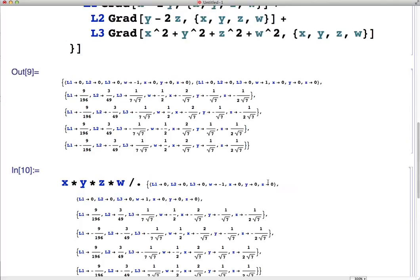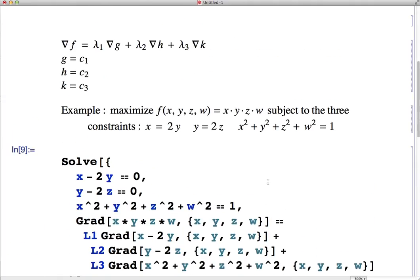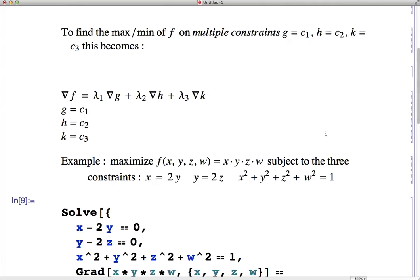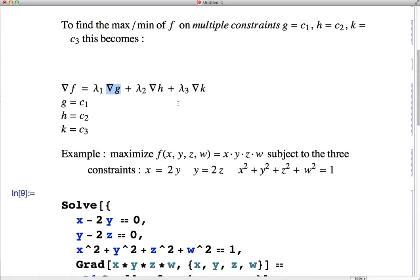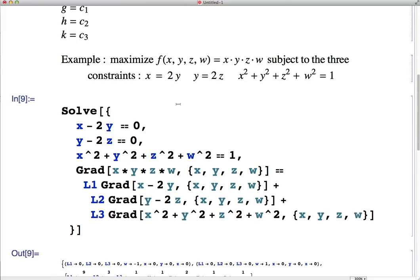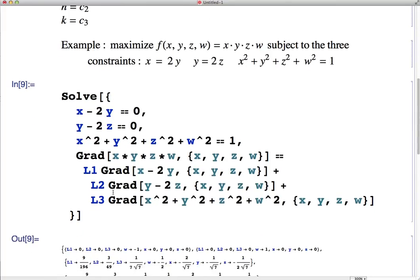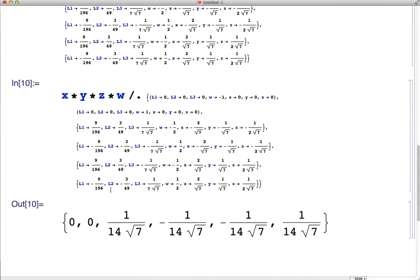Okay, so big picture. If you want to solve Lagrange multipliers with multiple constraints, the Lagrange equation changes a little bit. You have to include a Lagrange multiplier times the gradients of each constraint. And then we also saw how to actually solve a large system like this in Mathematica. So best of luck and email me if you have any questions, as always.